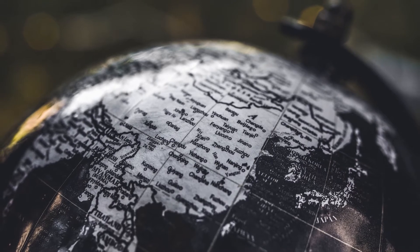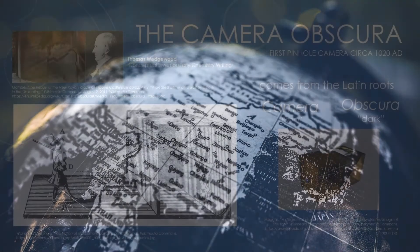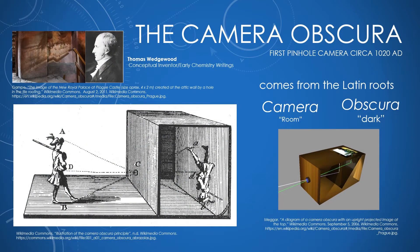Photography started coming in around the turn of the millennia. Around the year 1000 we started seeing some experimentations with cameras. The first camera was called the camera obscura, which comes from the Latin roots camera meaning room and obscura meaning dark. This probably happened by accident — there's a phenomena called the camera obscura effect illustrated in the diagram on the bottom left. When light passes through a pinhole into a dark room, you get an image projected inverted on the other side.